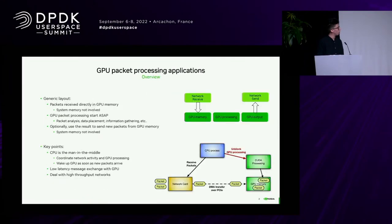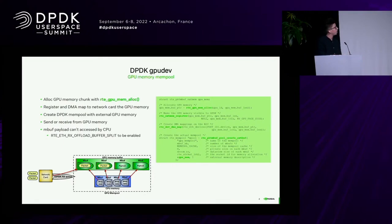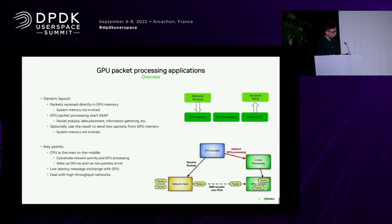Yes, the send side also works. I focused on the receive side because of the examples, but the send side works too. If you create a DPDK mempool with packets in GPU memory, you can produce packets in GPU memory and then send directly from GPU memory — so the GPU memory can push to the NIC directly without going through CPU memory.